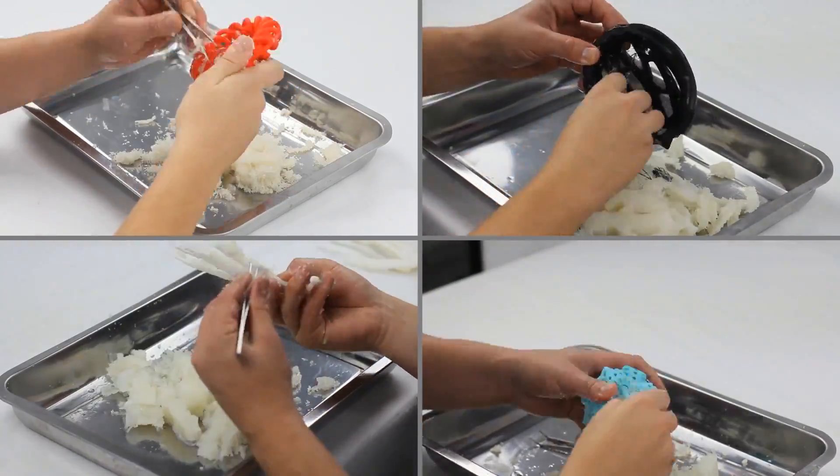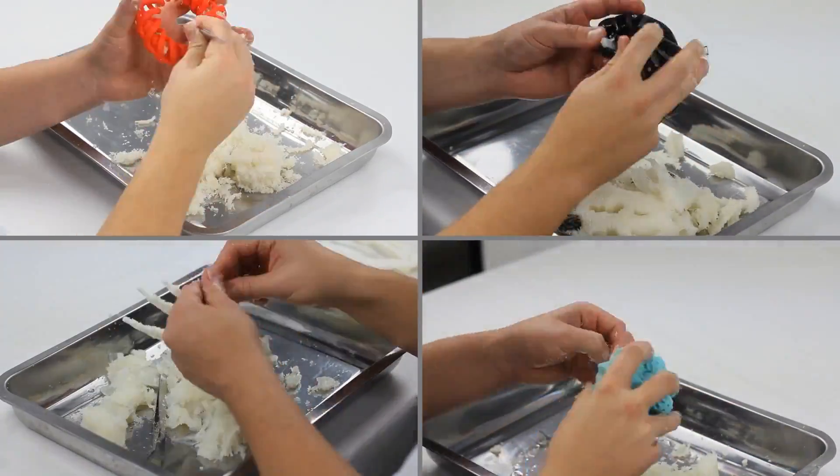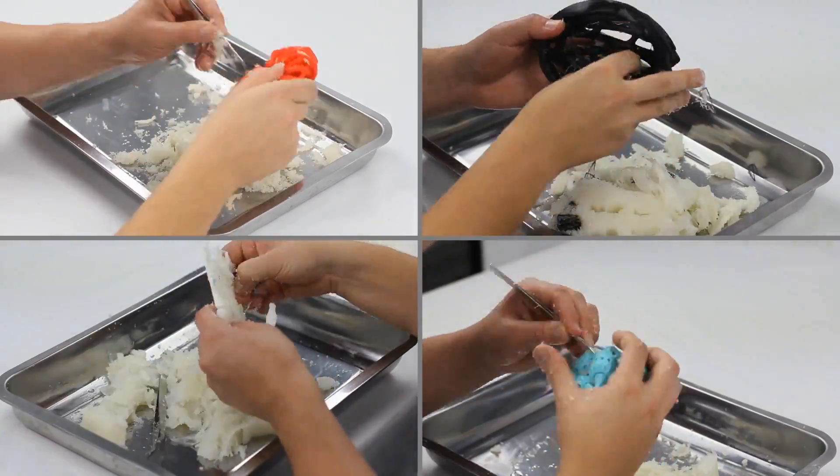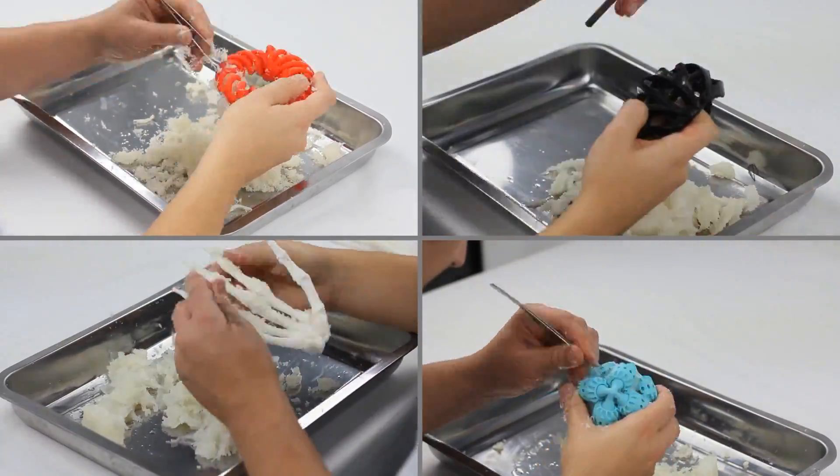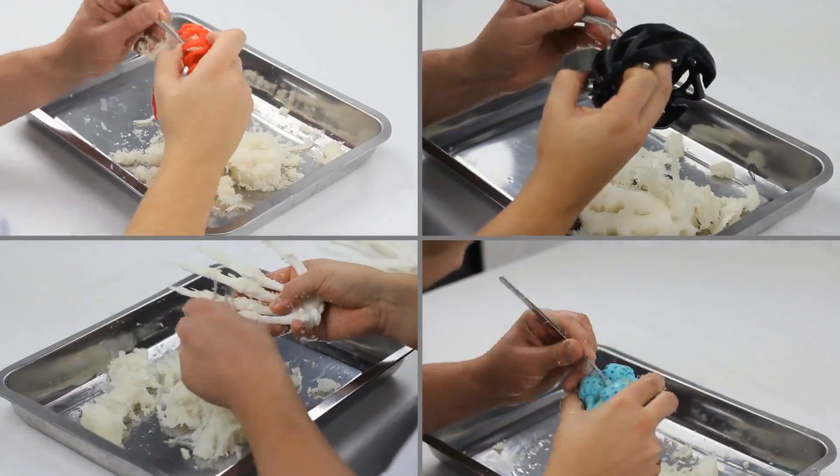702 is also a very stable filament not susceptible to humidity or temperature change. Store 702 just like any other PLA filament and enjoy a very long shelf life.